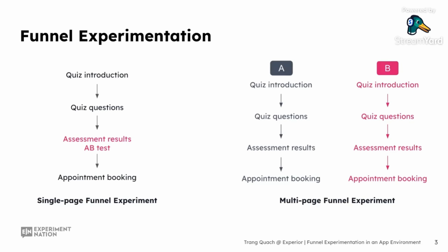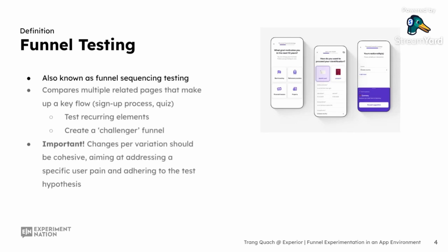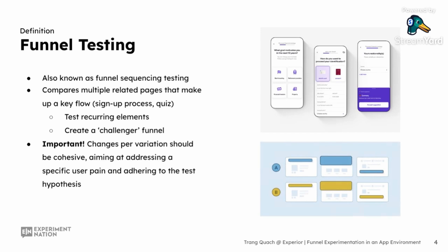Funnel testing is also known as funnel sequencing testing. In many ways it works similarly to A/B testing, but funnel testing goes deeper. Funnel testing compares multiple related pages that form a key user flow, like an app sign-up process or a subscription quiz. Think of it as taking a holistic view — instead of just optimizing one page, we aim to improve the entire funnel to increase conversion rates.